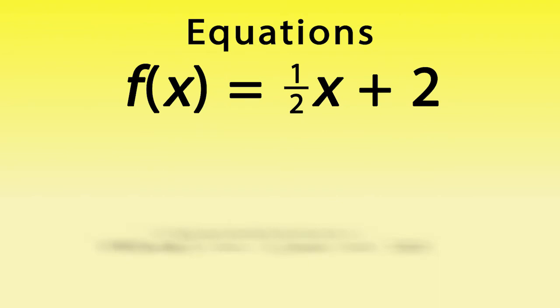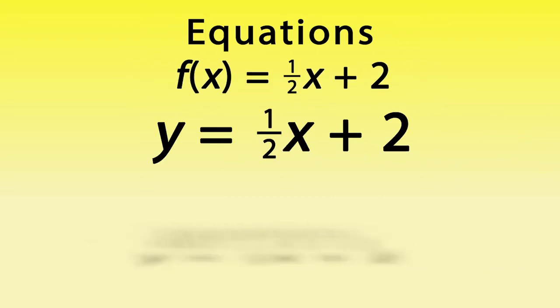An example of a function in slope-intercept form is f(x) equals one-half X plus 2. But you can also look at it as Y equals one-half X plus 2. The slope is one-half and the Y-intercept is 2.